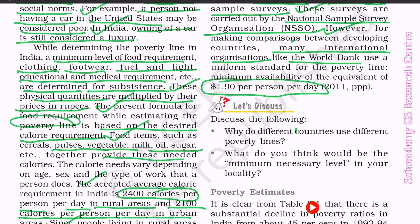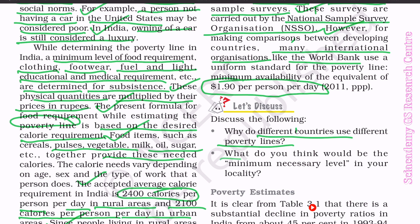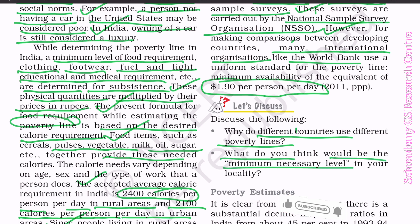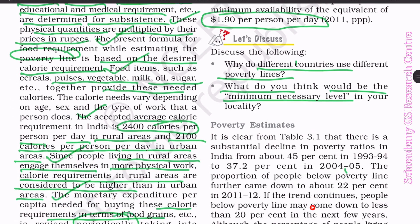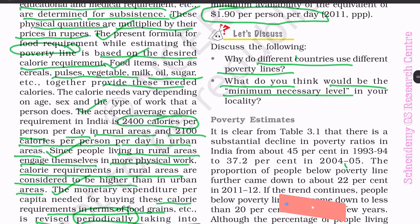Let's discuss: Why do different countries use different poverty lines? What do you think would be the minimum necessary level in your locality?